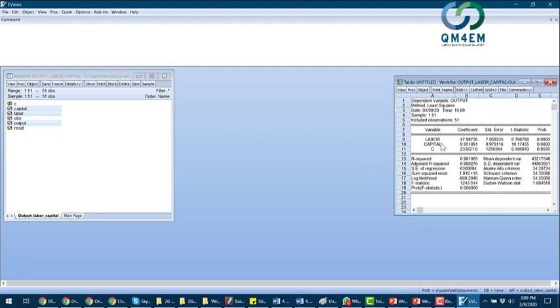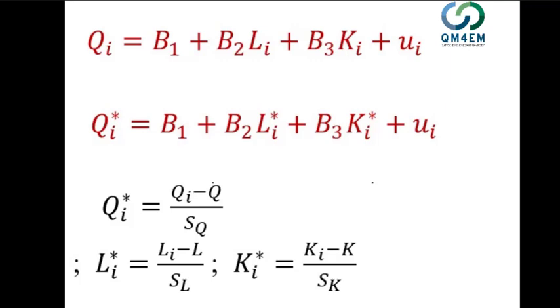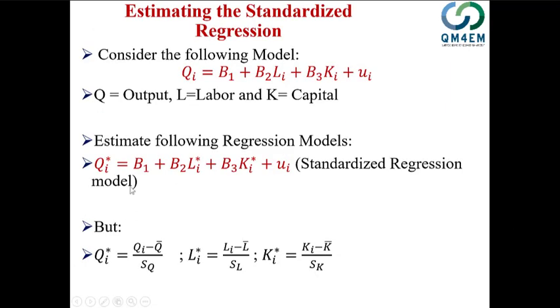Now I need to run this model again but this time using output, labor, and capital in standardized form. To do that I first need to generate the Q*_i variable, then the L*_i variable, and then the K*_i variable as per the given formula.